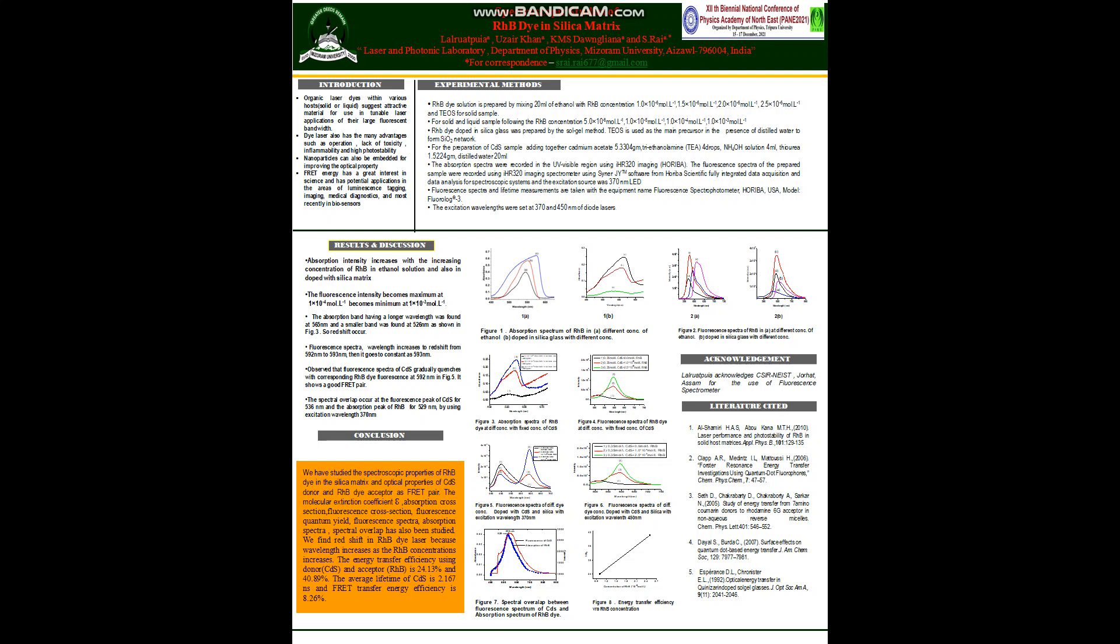For step number 4, that is fluorescent spectra with varying concentration of Rhodamine B and fixed concentration of CDS for excitation wavelengths 370 and 450 as we saw in Figures 5 and 6. It is observed that fluorescent spectra of CDS with corresponding Rhodamine dye fluorescence at 592 nm. That is, when CDS is excited, its excitation energy is transferred to Rhodamine dye acceptor through dipole-dipole interaction.